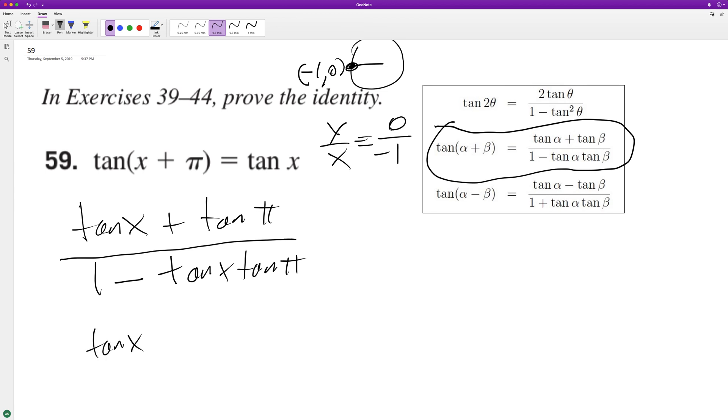So tangent of x remains what it is, and then plus tangent of pi is zero, over one minus tangent of x times the tangent of pi, which is zero.